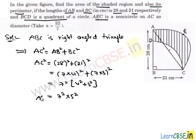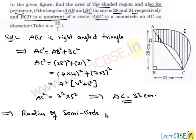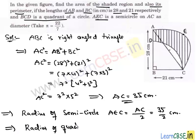So we get AC square. Here the value of AC is 7 times 5 which is 35 cm. Therefore radius of semicircle AEC is equal to half of hypotenuse which is 35 upon 2 cm. Similarly radius of quadrant of a circle, therefore it is equal to side BC which is 21 cm.